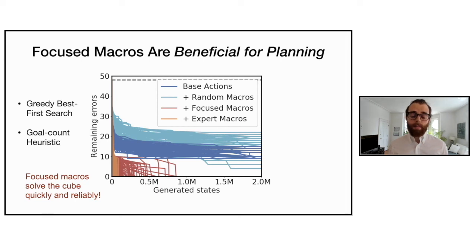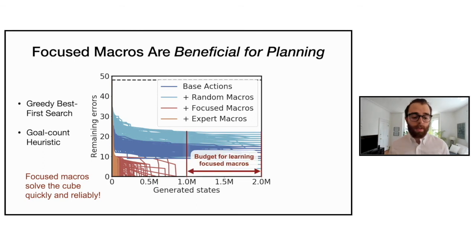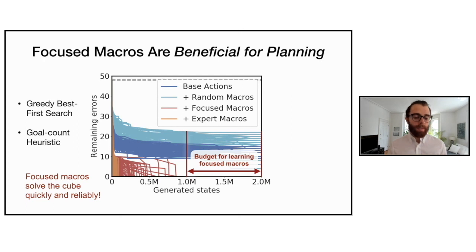Even better, the macro learning process is both goal agnostic and instance agnostic — we only need to learn the macros for the first planning instance and can reuse them for the rest. This means the learning cost can be amortized over the number of planning instances. Even accounting for the one million step learning budget, we're still able to solve 100% of Rubik's Cube instances within the two million state planning budget — whereas with base actions alone, we couldn't solve any problems in that budget.